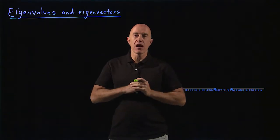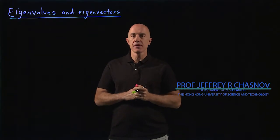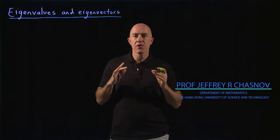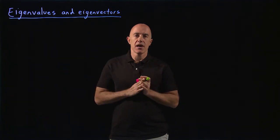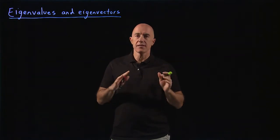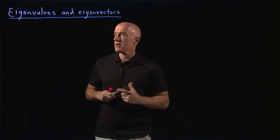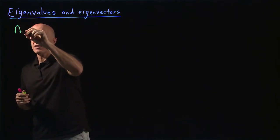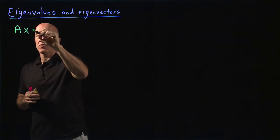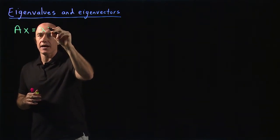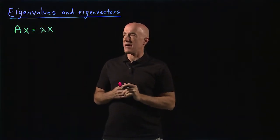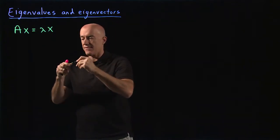A very important problem in matrix algebra is called the eigenvalue problem. The eigenvalue problem will be essential in solving certain types of differential equations. The eigenvalue problem is a matrix A times a column vector x equal lambda, a scalar, a number times x. So if you have an equation like this, Ax equals lambda x, that's called an eigenvalue problem.